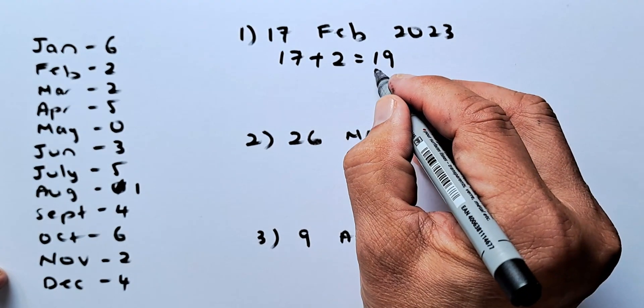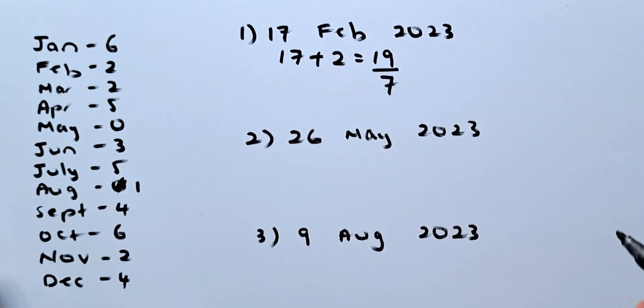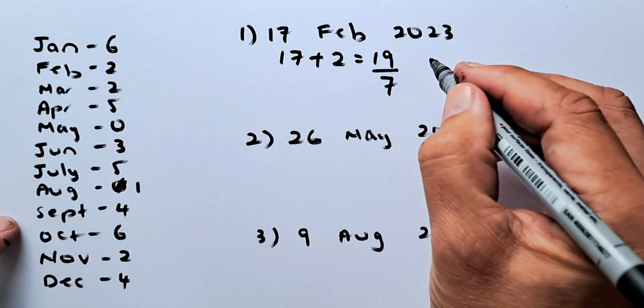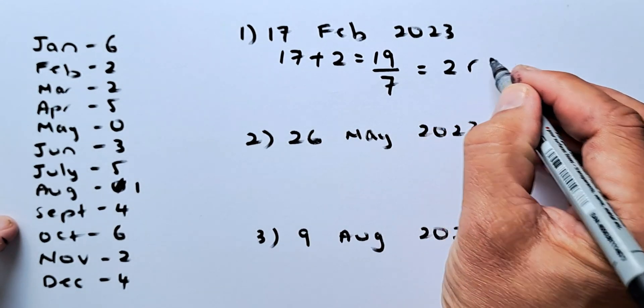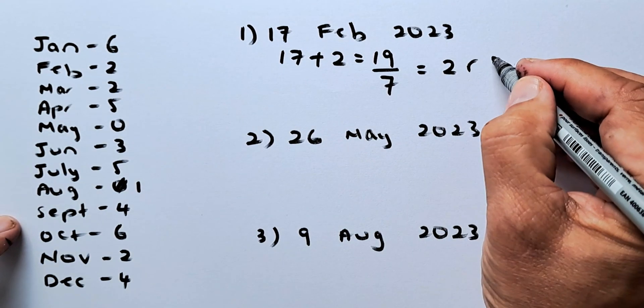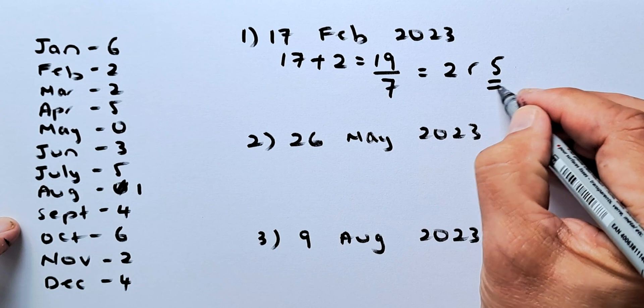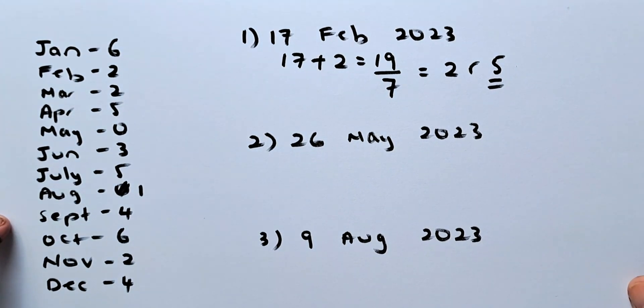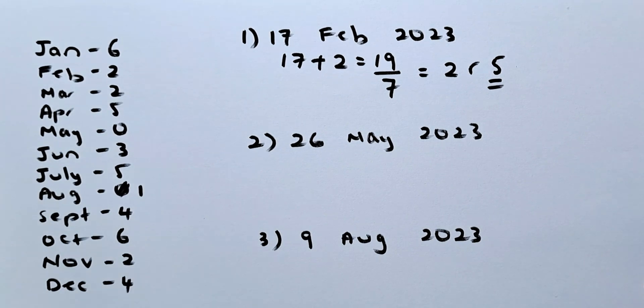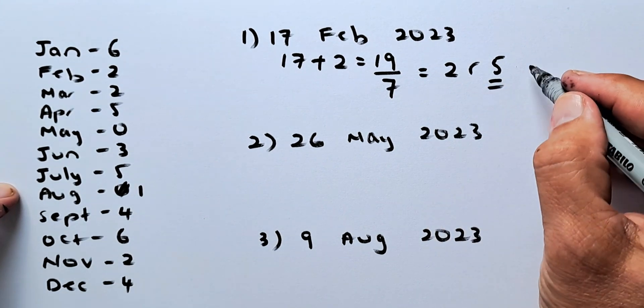The next step, you're going to divide 19 by 7 because there are 7 days in a week and you are going to get the answer of 2 remainder. 2 times 7 is 14, remainder 5. This 5 will indicate what day it is. If it is 1, it's a Monday, 4 is a Thursday, and please note 0, if there's no remainder, it's a Sunday. So if 5, the answer is going to be a Friday.